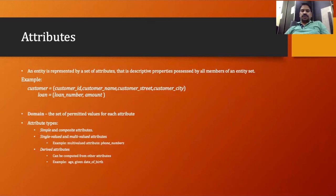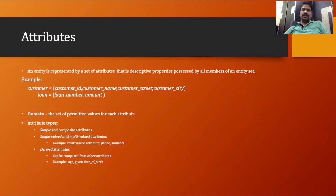Then we have the primary key attribute. A primary key attribute is nothing but the attribute we take as the primary key of the table. So if we take any attribute as a primary key, it is called a primary key attribute.